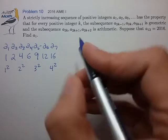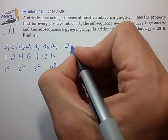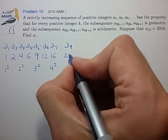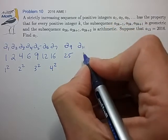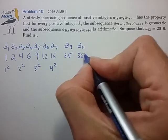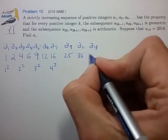And let's continue this a little bit further. We would then find that A9 is equal to 25, and A11 is 36, and A13 would be 49.